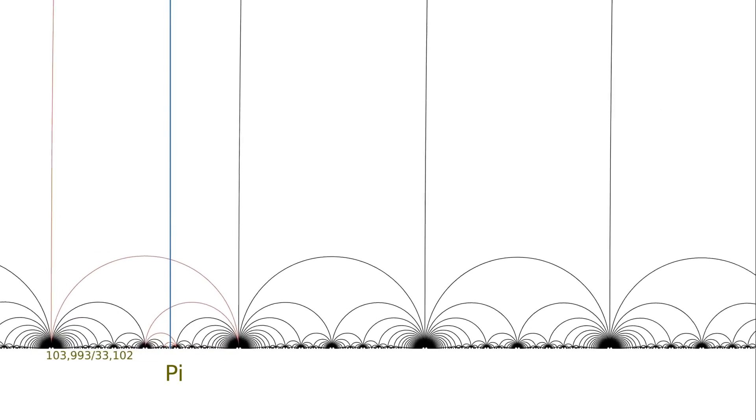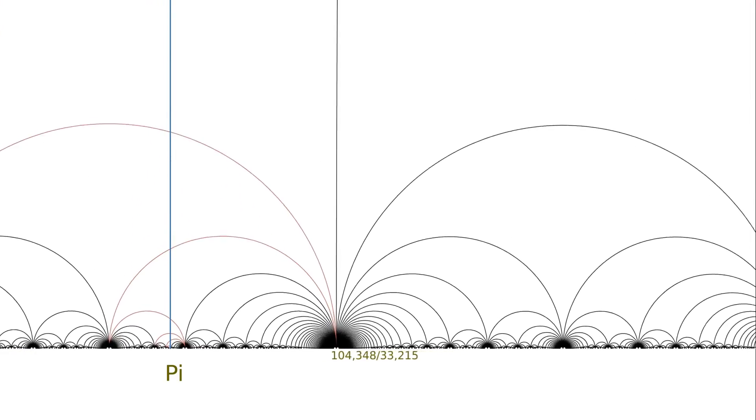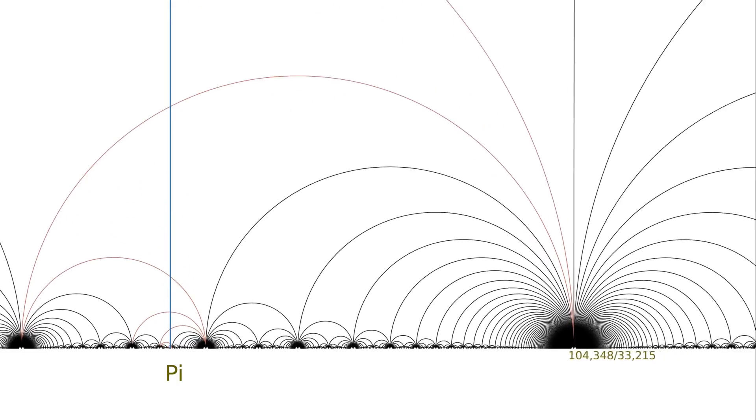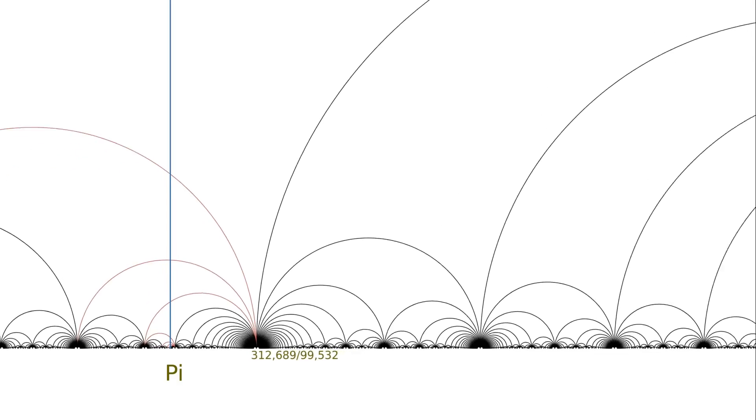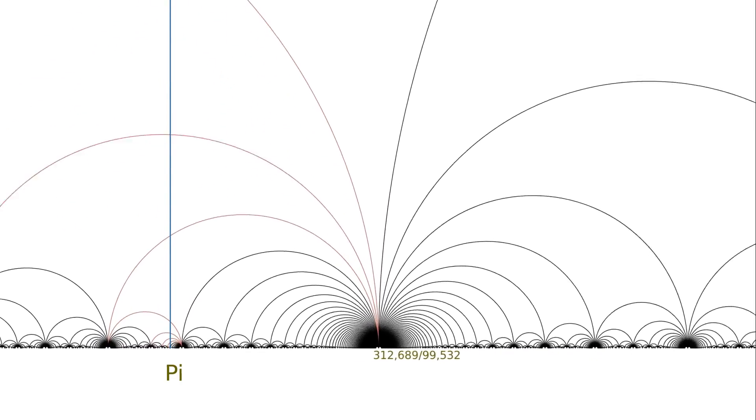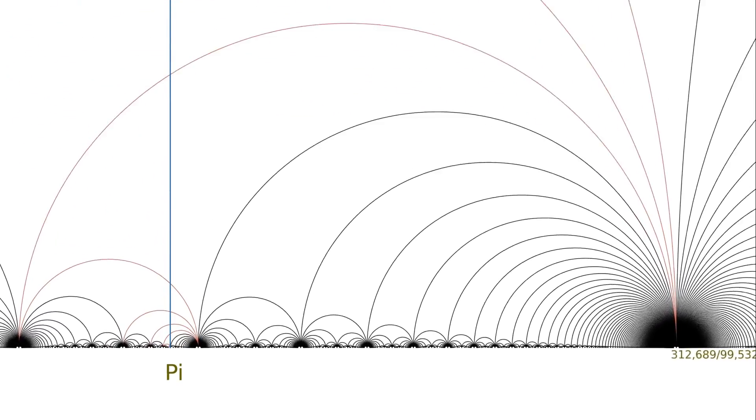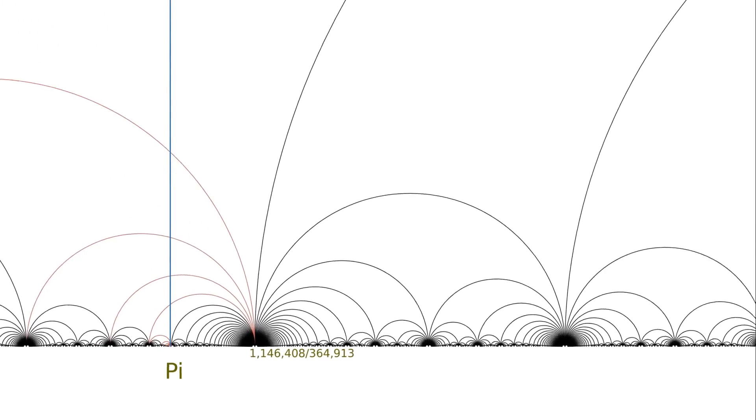One amazing thing about the continued fraction expansion of pi is that it has a few really big coefficients early on, especially that 292, which means that 355 over 113 is such a great approximation. We don't know of any special pattern of any kind that shows up in the continued fraction expansion of pi. Why does it have this amazing 292 early on? No idea. The continued fraction expansion continues in a bit less exciting way after that.